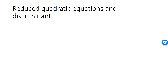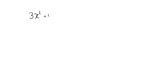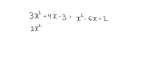A quadratic equation is an equation which has quadratic expressions on both sides. For example, 3x squared plus 4x minus 3 equal to x squared minus 6x plus 2 is a quadratic equation. For any equation, I can always move all of the terms to one side, leaving me with 0 on the other side. Subtracting both sides by x squared, I am left with 2x squared on the left hand side. Adding 6x to both sides gives me 10x, and subtracting 2 from both sides gives me minus 5 on the left hand side, equal to 0.